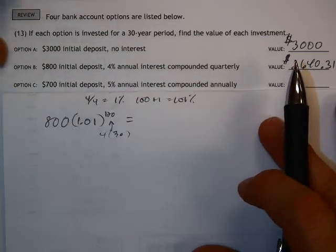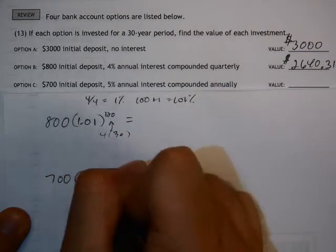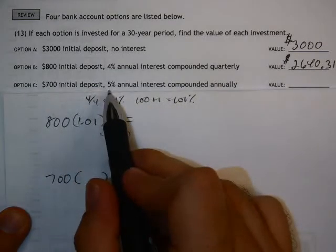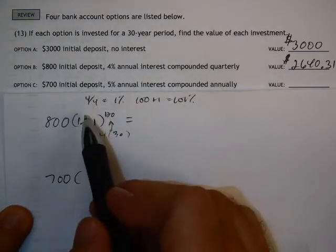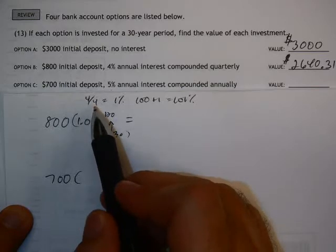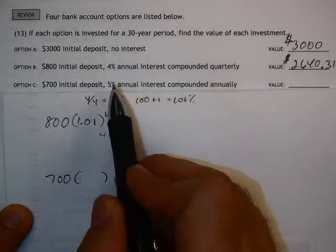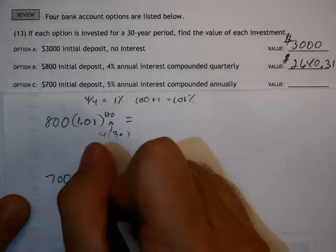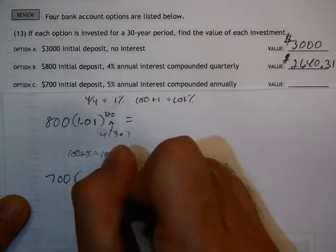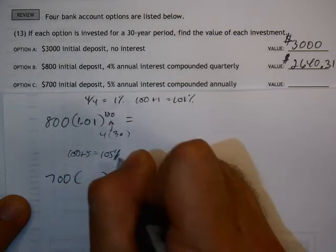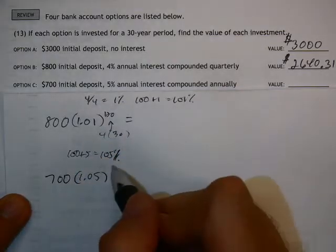Option C, $700 initial deposit with 5% annual interest compounded annually. That means it's just done once per year. In the other option, we had to divide that percentage by 4 because of being compounded quarterly. Annually means we don't have to change the 5% at all. It's just 0.05, so 5% is going to add to 100, which gives us 105%, which as a decimal is 1.05.